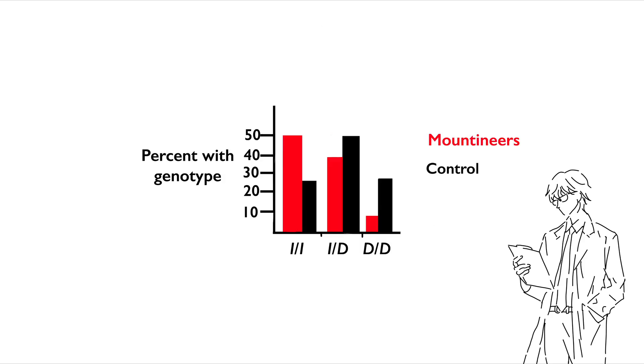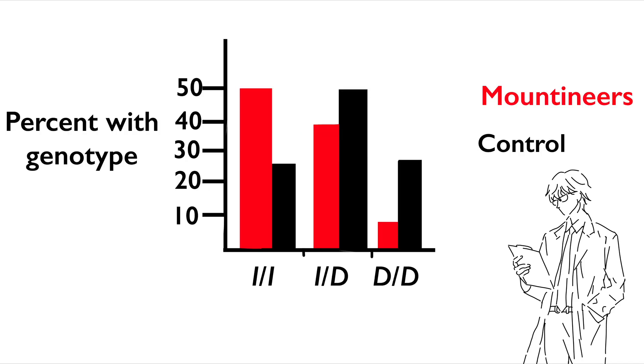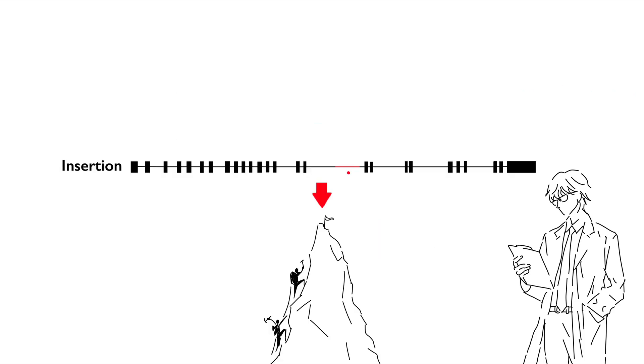Montgomery and his team found that the insertion allele had a significantly higher frequency among elite mountaineers, with excess of the homozygous insertion genotype and deficiency of the homozygous deletion genotype. Now this was a huge breakthrough at the time. Never before had a correlation between a gene and a tangible phenotype been found.